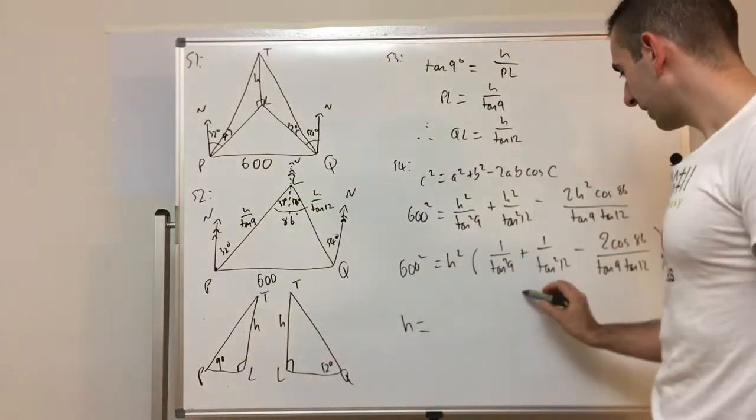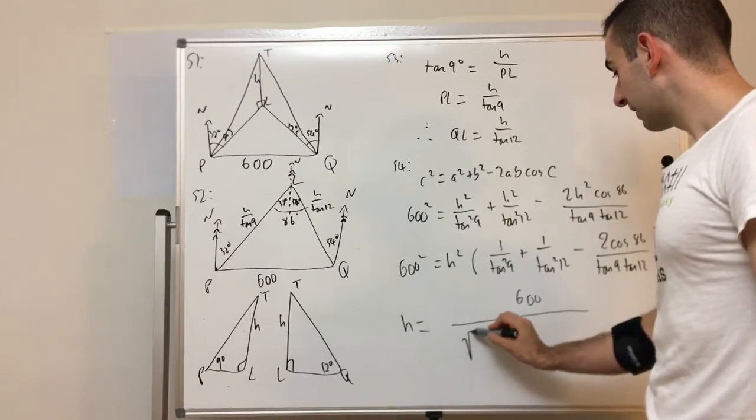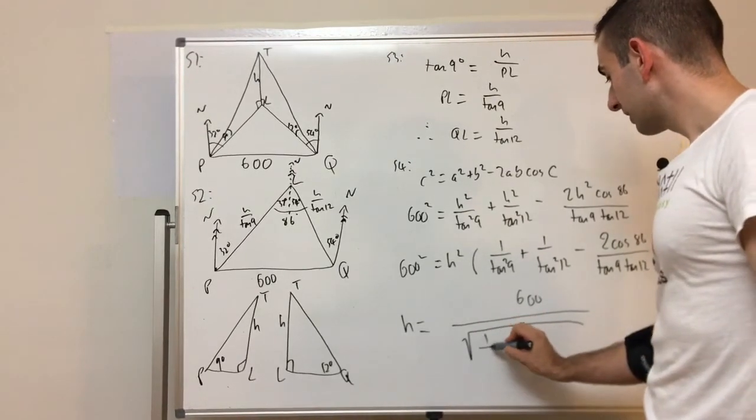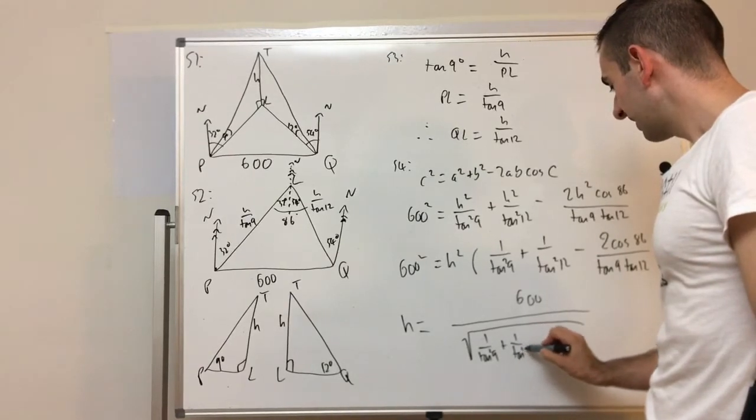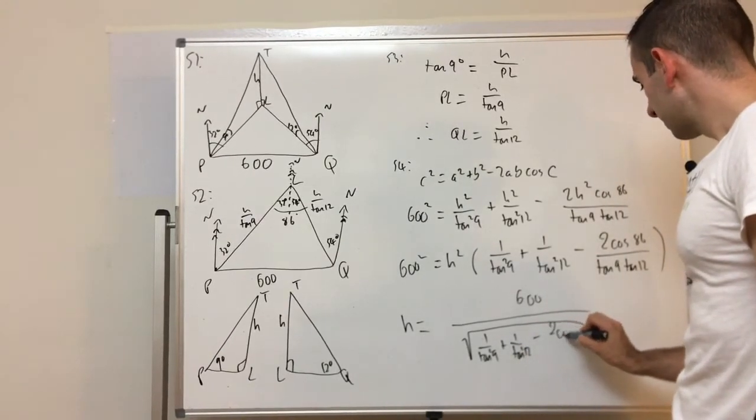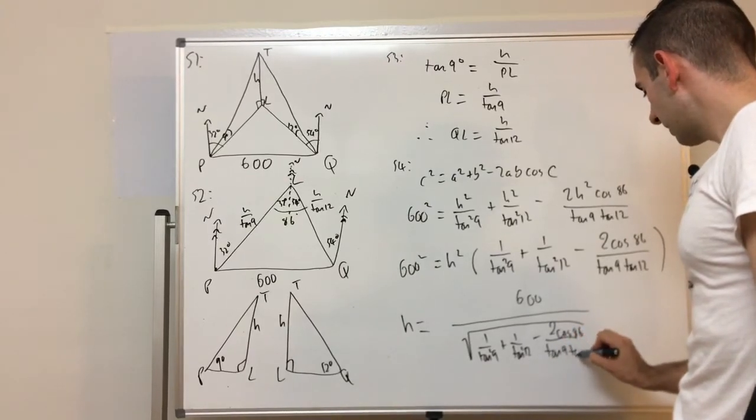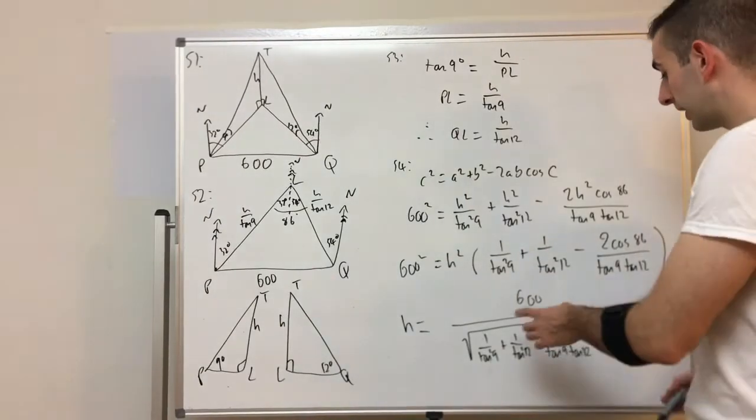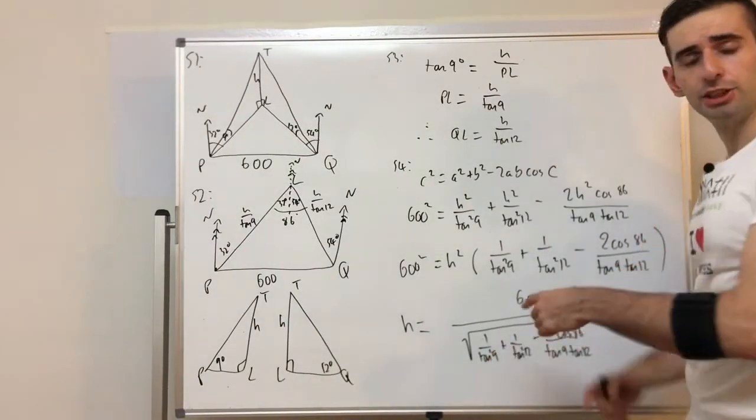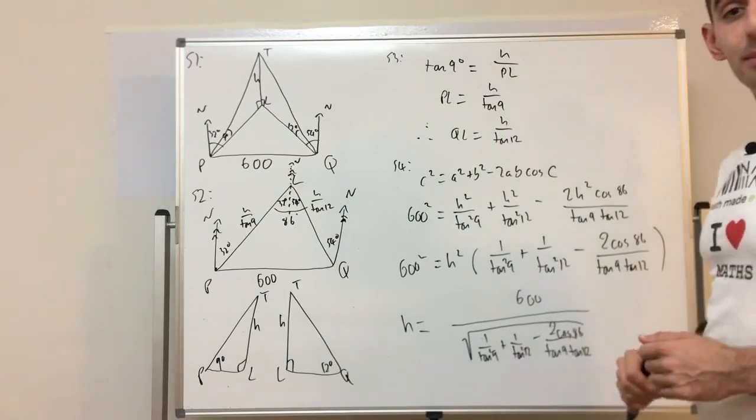So what you'll notice is each of these has an H² which means I can factorise that out: H² times (1/tan²9 + 1/tan²12 - 2 cos 86 / (tan 9 tan 12)) = 600². Which means I can rearrange and square root. By dividing this over and square rooting we get H = 600 / √(1/tan²9 + 1/tan²12 - 2 cos 86 / (tan 9 tan 12)). And the reason we leave it as 1/tan²9 instead of changing it to cot is because the calculator does not have cot, so this is actually how you're going to have to type it into the calculator.